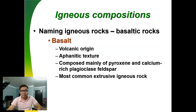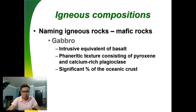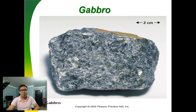Basalt is of volcanic origin with aphanitic texture, composed mainly of pyroxene and calcium-rich plagioclase feldspar. It is the most common extrusive igneous rock. Each rock has its own composition, textures, and characteristics. Gabbro is the intrusive equivalent of basalt, with phaneritic texture also consisting of pyroxene and calcium-rich plagioclase. Its significance depends on its role in oceanic crust.